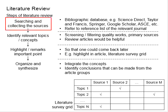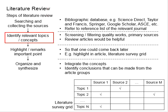After you have done searching and collecting enough references for your literature review, you will start identifying relevant topics and concepts. You will need to do some screening and filtering of quality works. You will also need to know whether the sources are primary or secondary. Some review papers will be helpful for a quick access to the relevant topics in the fields you would like to study.